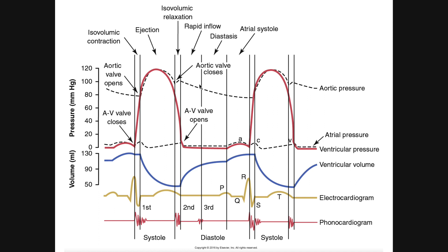What chamber of the heart is this with respect to? It could be any one of the four chambers, but this is the left ventricle because it says 'aortic' — only the left ventricle is associated with the aorta. The red solid line is the pressure in the left ventricle. The top dotted line is the aortic pressure, which is not constant. The lower dotted line is the atrial pressure, and the blue line is the volume of blood inside the left ventricle at any given time.